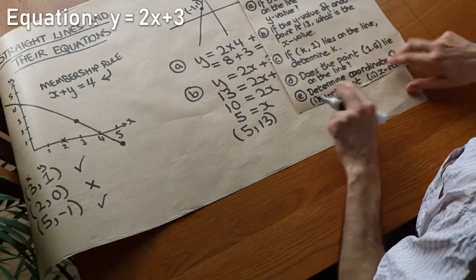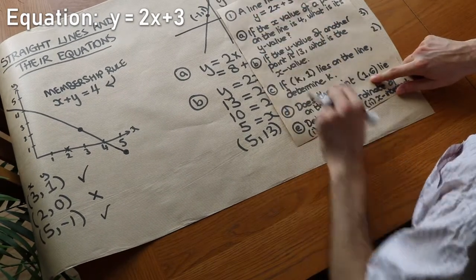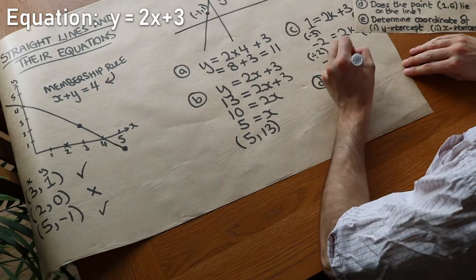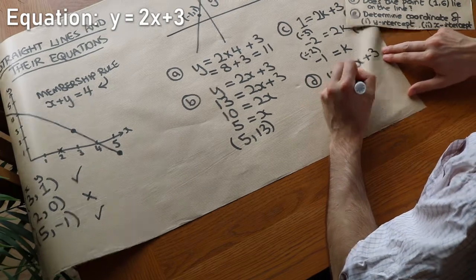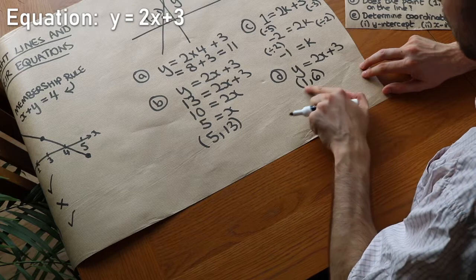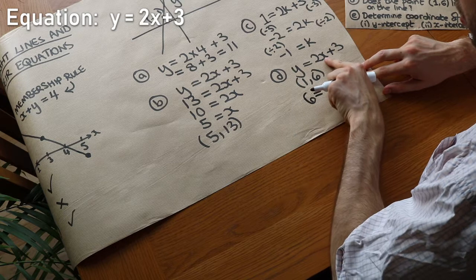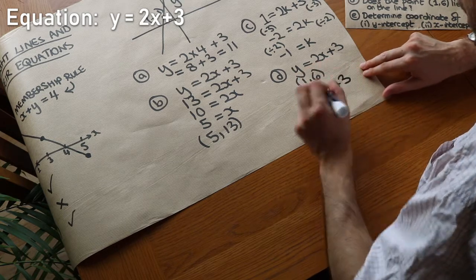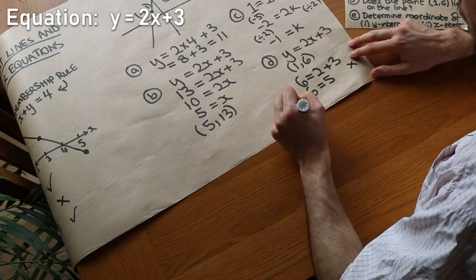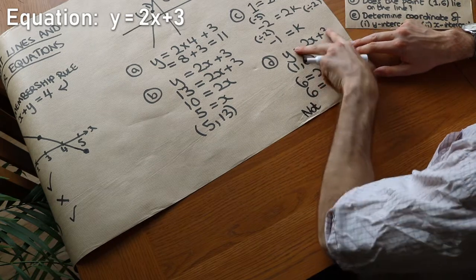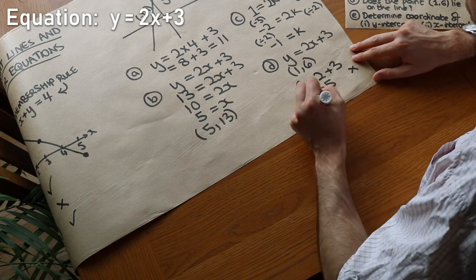Question D: does the point 1, 6 lie on the line? If it does lie on the line it's got to satisfy the equation y equals 2x plus 3. Substituting in, the y value is 6, so 6 equals 2 times 1 plus 3, which gives 6 equals 5. That is not true, and therefore it's not on the line. This point doesn't obey the membership rule, so it cannot be on the line.